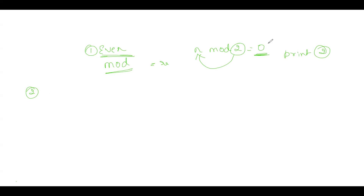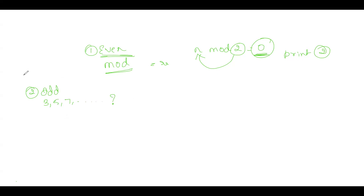For the second situation, if the given number does not give remainder 0 for mod 2, it means it is an odd number or a prime number. In this case, I have to start dividing the number from 3, then 5, 7, etc. Now, up till where are we supposed to divide the number? To understand this, let us look at how factors work.